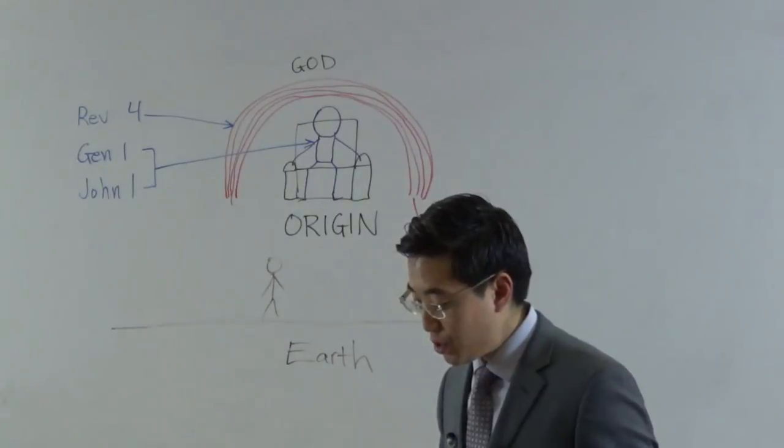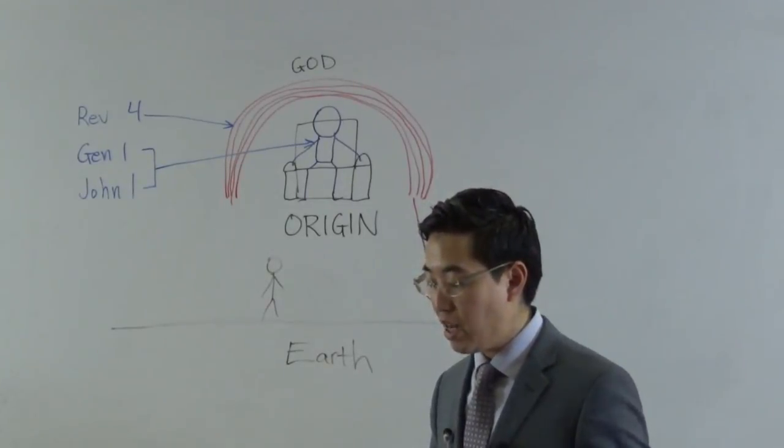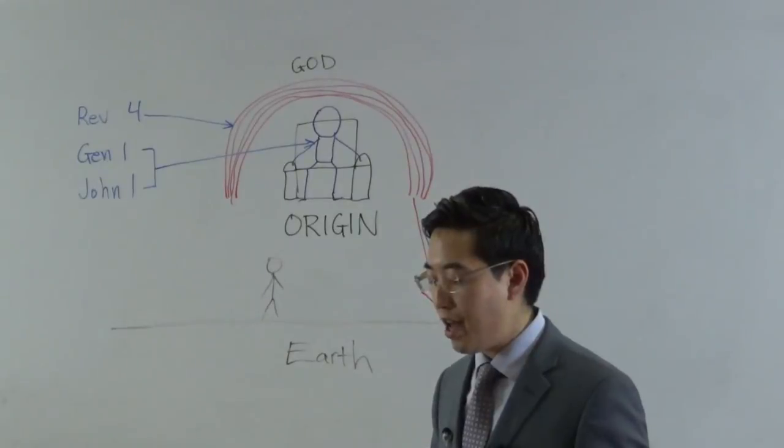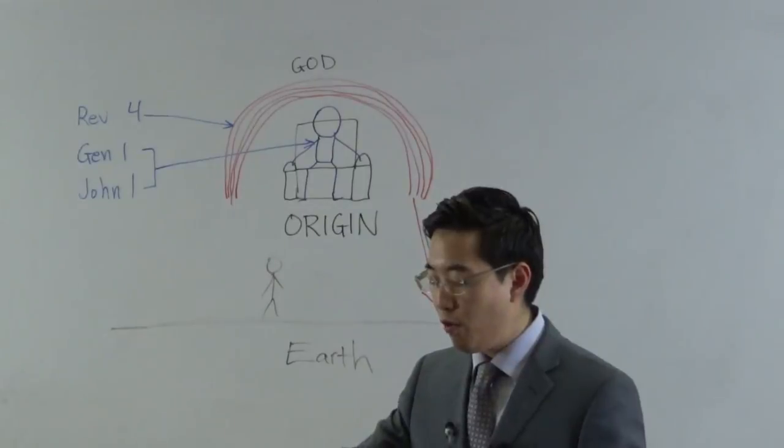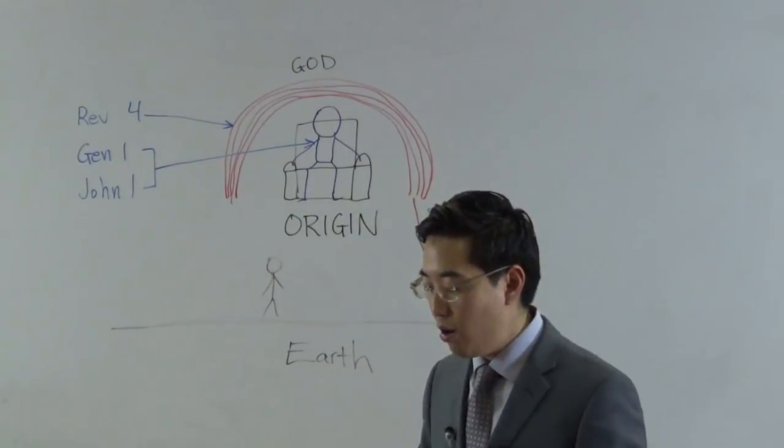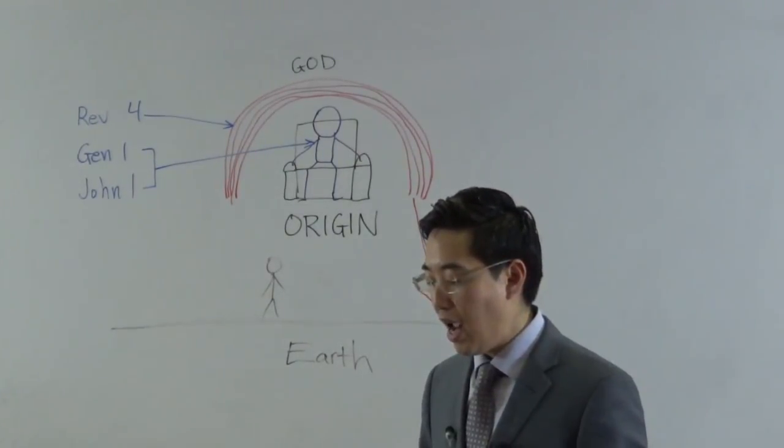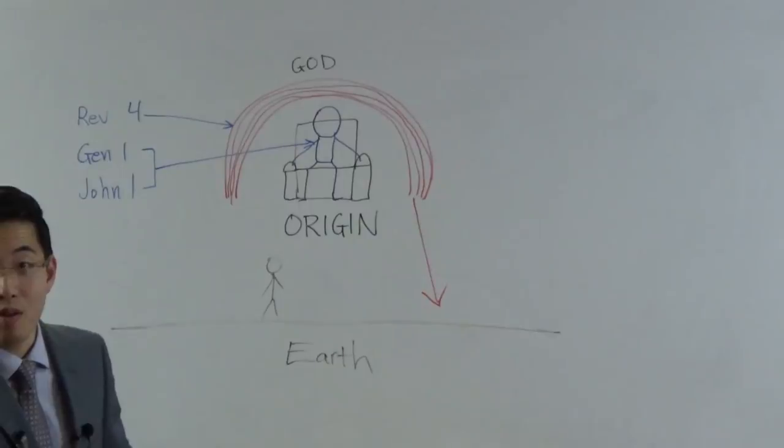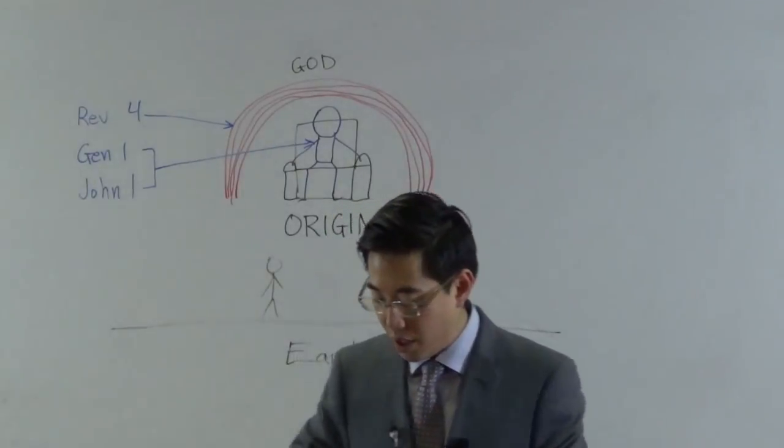Genesis 9:12: And God said, This is a token of the covenant which I make between me and you and every living creature. I do set my bow in the cloud, and it shall be for a token of a covenant between me and the earth. It shall come to pass when I bring a cloud over the earth that the bow shall be seen in the cloud. And I will remember my covenant between me and you. See this rainbow? It's showing between him and them on the earth, that he will not send a flood.